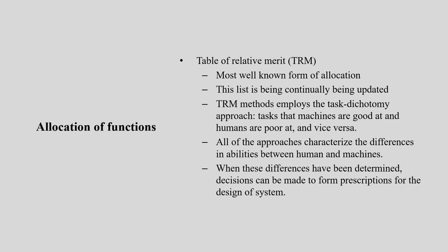The Table of Relative Merit (TRM) gives a relative rating to each task and component and allocates their function. It is a continually updated list. TRM employs a task dichotomy approach — the researcher must decide whether human or machine is better at a particular function. It is not both together; either you give the task to the human or to the machine.